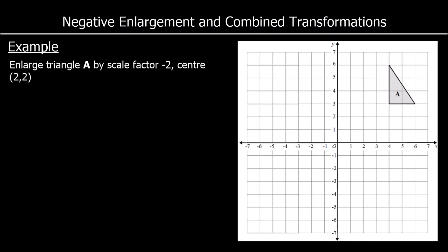In this question, we are being asked to enlarge triangle A by a scale factor of negative 2 with the centre at (2, 2). So the centre of enlargement is at (2, 2), and we're going to do this by looking at each of the corners of the triangle separately.